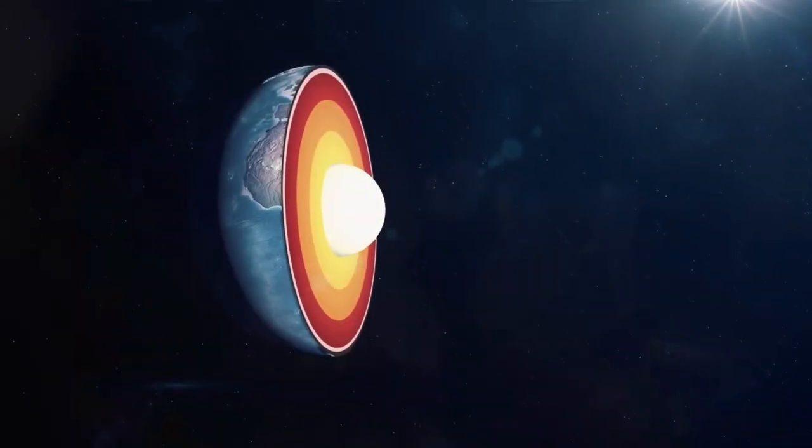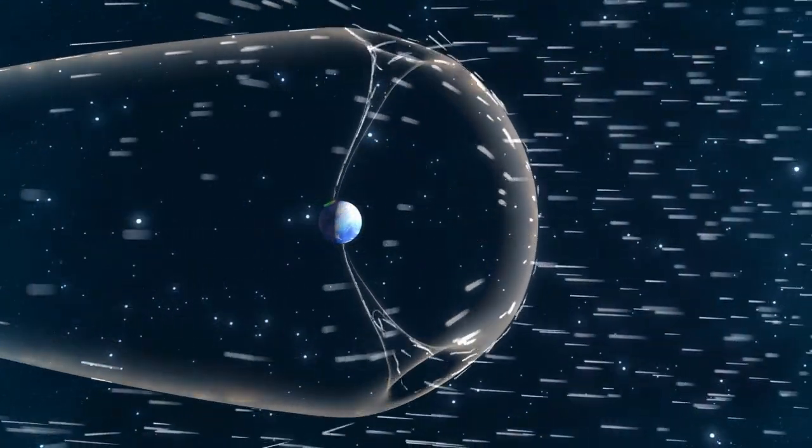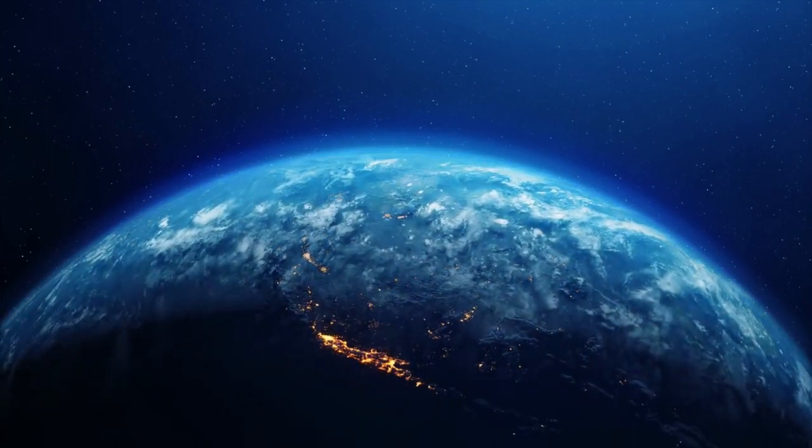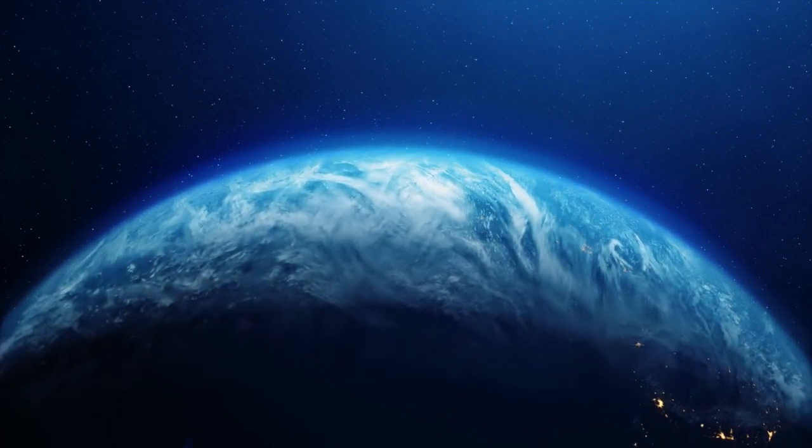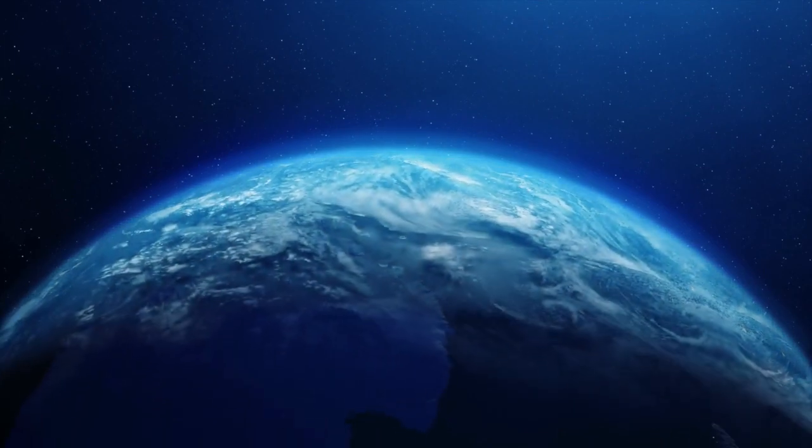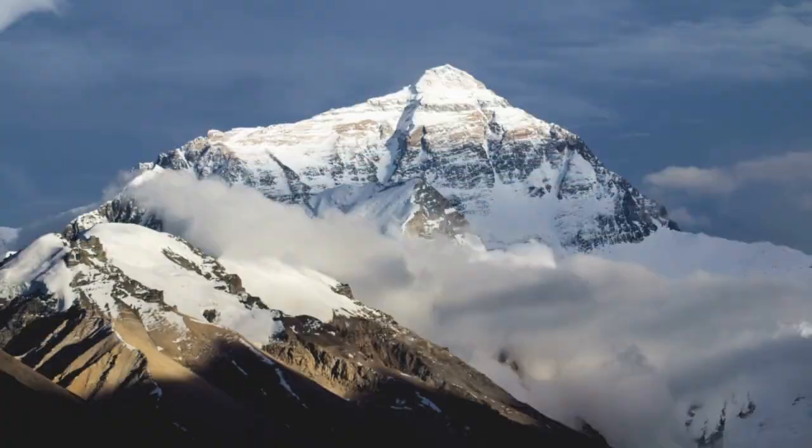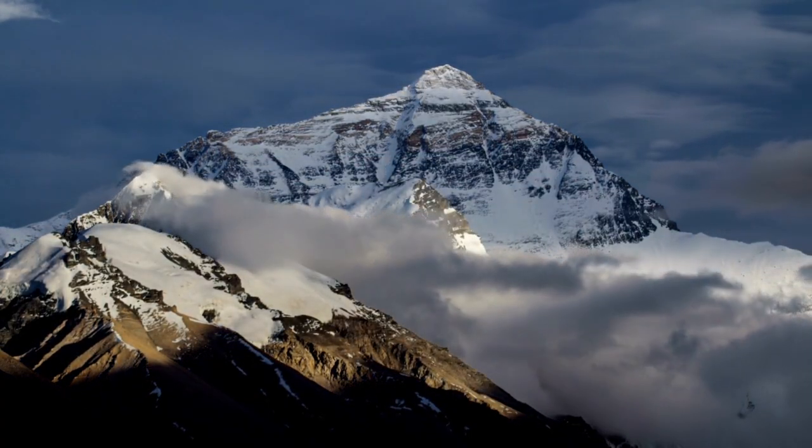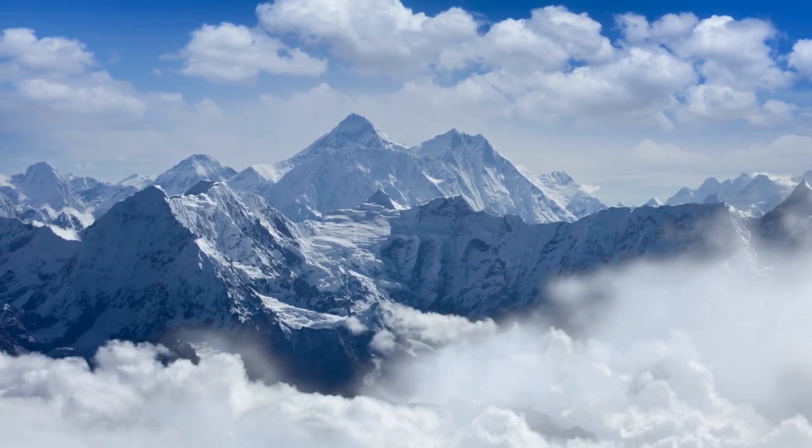Earth's magnetic field, created by its spinning molten core, protects us from harmful solar radiation. Earth's atmosphere is constantly changing, with gases like oxygen and carbon dioxide being cycled through the biosphere and atmosphere in a delicate balance. The highest point on Earth is Mount Everest, which stands at 29,029 feet tall.